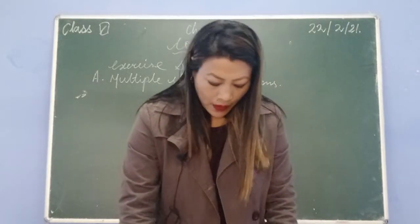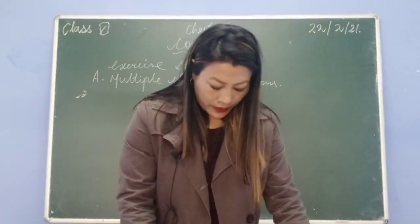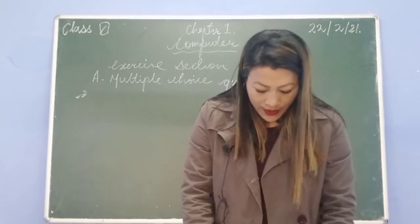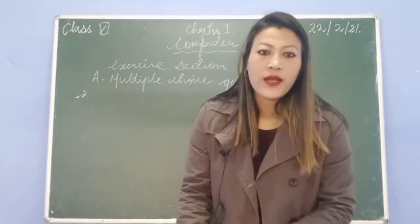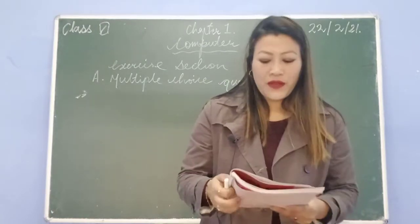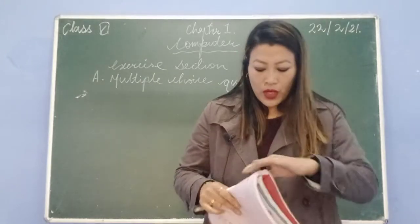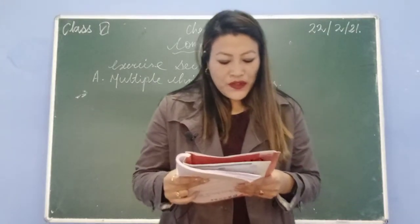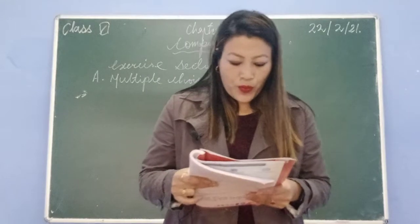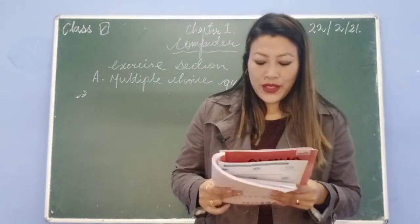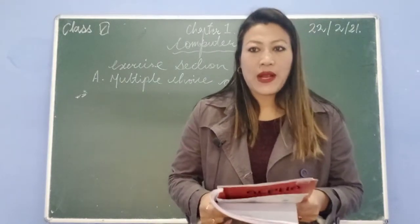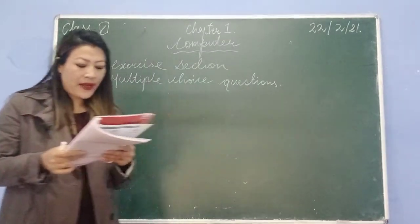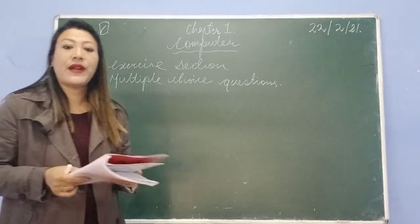Exercise section number 1 is multiple choice questions. If you have your book or PDF, you can refer to that later on. Question 1: it converts a high-level language program line by line to a machine language. Your options are assembler, compiler, interpreter, and processor.